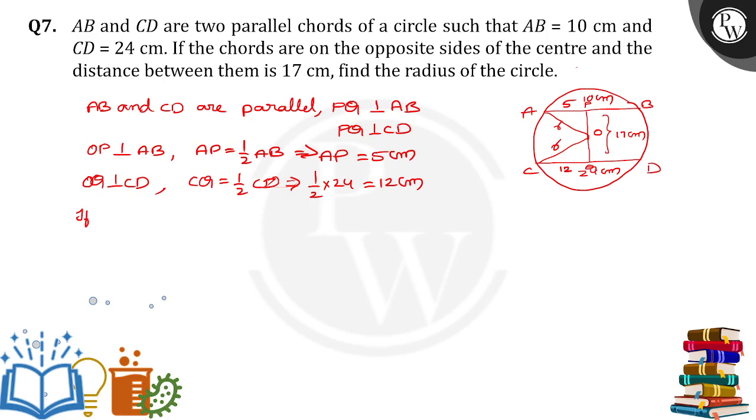If OP is equal to X, then OQ is equal to 17 minus X. So how can we find the radius R?